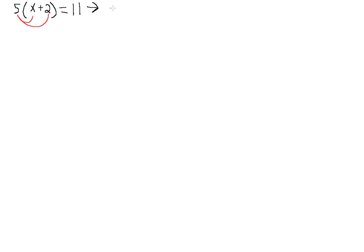So what do we have? We have 5 times x, which is 5x, plus 5 times 2, which is 10, equals 11. Next, let's go ahead and subtract 10 from both sides. This is going to take care of the plus 10 on this side — we're keeping our variable on this side and moving everything else to the right side. So plus 10 minus 10 will cancel out. We're left with 5x equals 1.